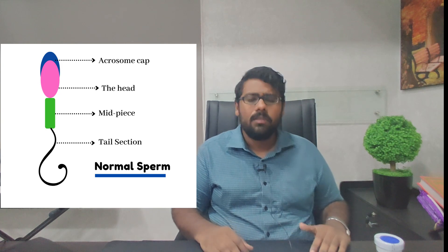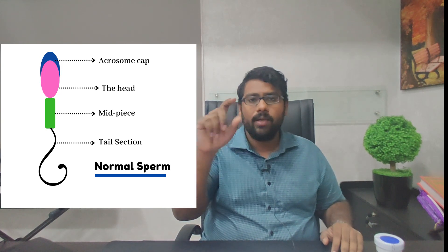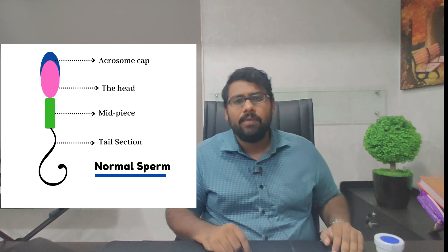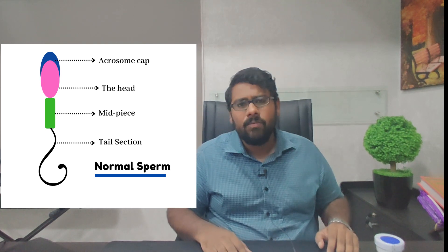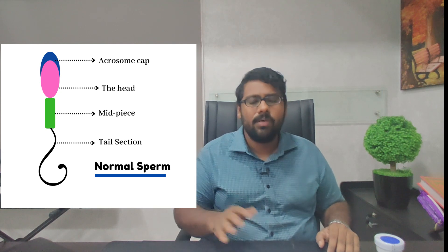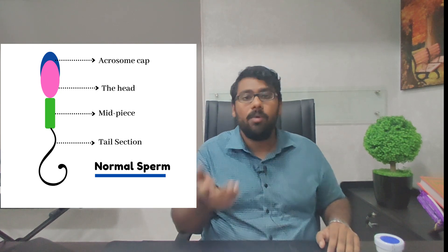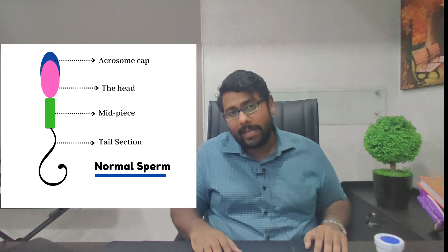Once motility scoring is done, the next step in semen analysis is sperm morphology. Looking at the image on the right, a normal appearing sperm has a round head, an acrosome cap, a mid-piece section, and a tail. Normal appearing sperms should be seen at about 3 to 4% of overall spermatozoa in a man's ejaculate, as it is believed that normal appearing sperm can actually fertilize or bind to the egg.